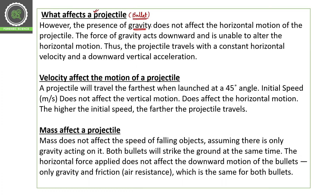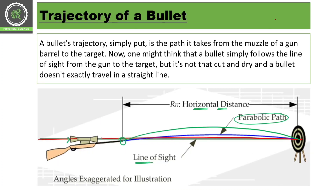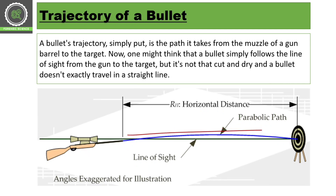Gravity does not affect the horizontal motion. The horizontal motion remains constant. Gravity doesn't affect the horizontal motion of the bullet.